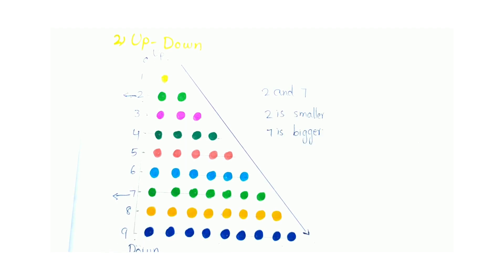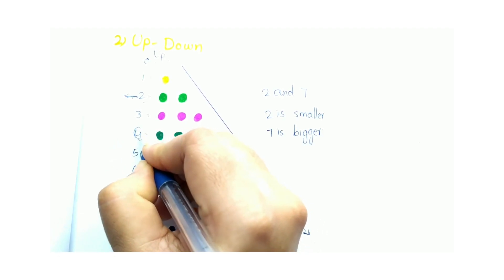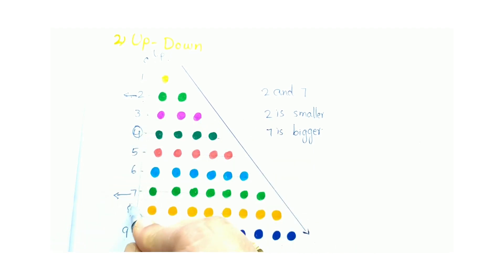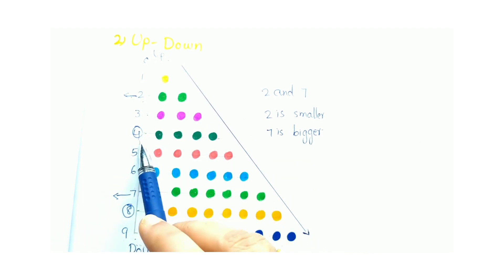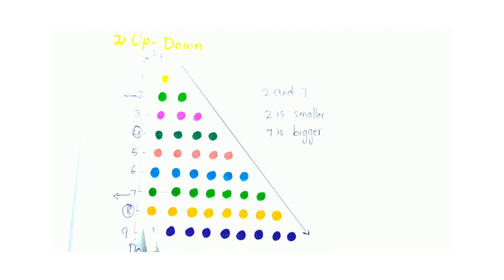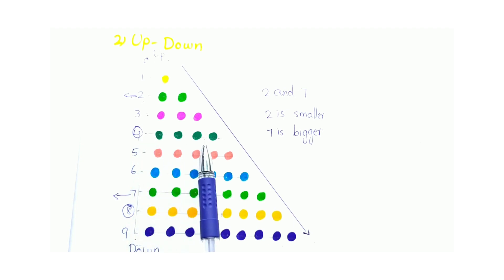Let's take another number — 4 and 8. See, 4 is here and 8 is here — it becomes bigger. So 4 is the smaller number and 8 is the bigger number.